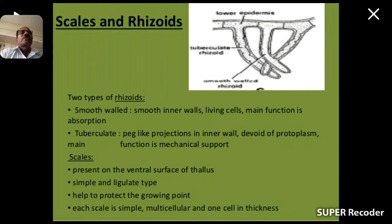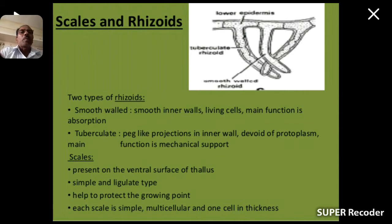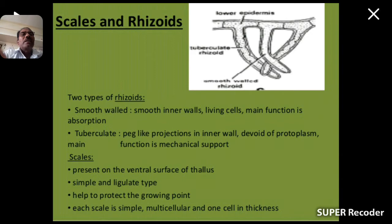Scales and rhizoids of Riccia. Rhizoids are of two types: smooth-walled rhizoids and tuberculated rhizoids. Smooth-walled rhizoids have smooth inner walls and are living cells; their main function is absorption of water. Tuberculated rhizoids have peg-like projections on the inner wall, are devoid of protoplasm, and their main function is mechanical support. Scales are present on the ventral surface of the thallus, are simple and ligulate type, and help to protect the growing point. Each scale is simple, multicellular, and one cell in thickness.